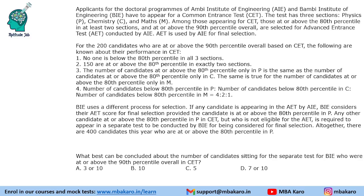It says that applicants for the doctoral programs of UMB Institute of Engineering, AIE and BIE, have to appear for a common entrance test. The test has three sections: Physics, Chemistry, and Maths. Among those appearing for CET, those at or above the 80th percentile in at least two sections and at or above the 90th percentile overall are selected for the advanced entrance test conducted by AIE.